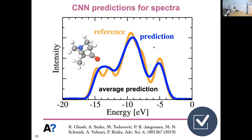A final question: why are you aiming for Raman spectra instead of electronic transitions, given that Raman is more related to the structure? The speaker gives an honest answer: it was a pragmatic choice — they just picked a spectrum that was readily available with the dataset and started training on it. Intuitively one might expect electronic transitions to be more difficult, but the starting point was simply what data was available.